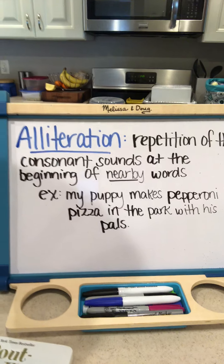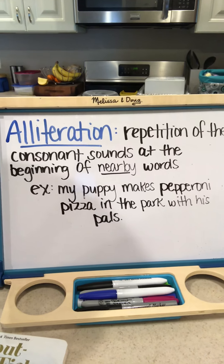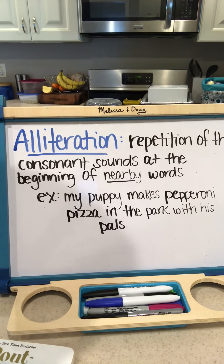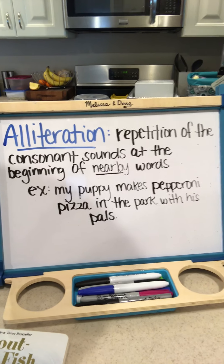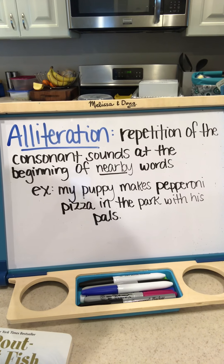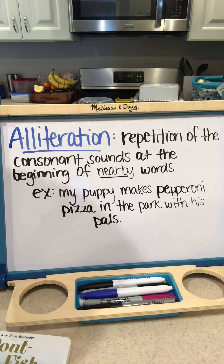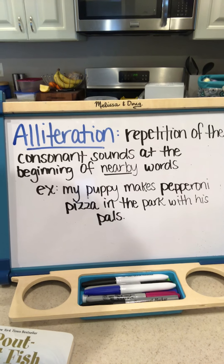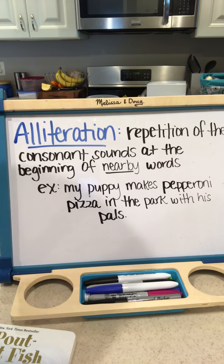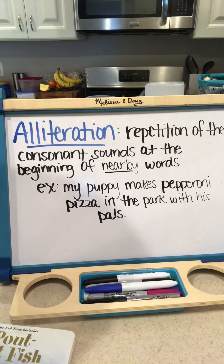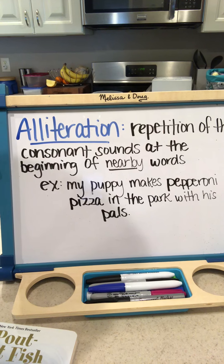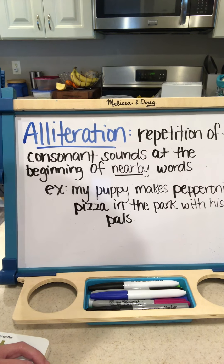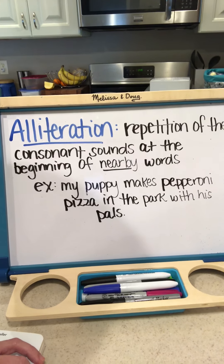Here is an example. My puppy makes pepperoni pizza in the park with his pals. I'm going to read it again, and I want you to listen closely for the consonant sound that is being repeated throughout this sentence. My puppy makes pepperoni pizza in the park with his pals.